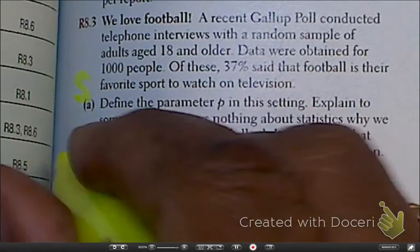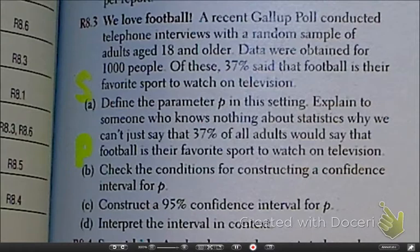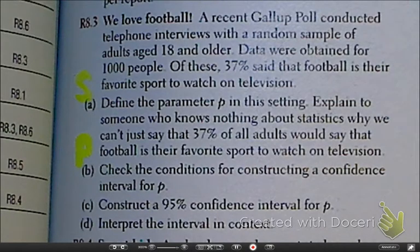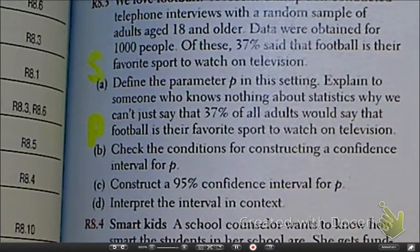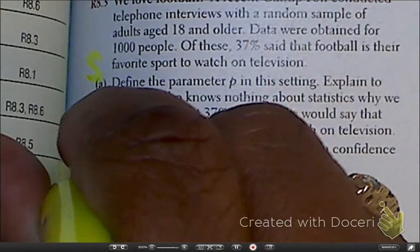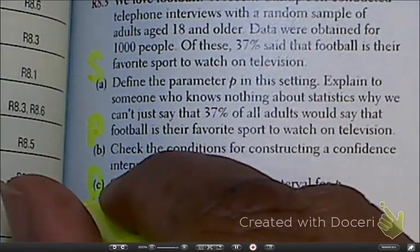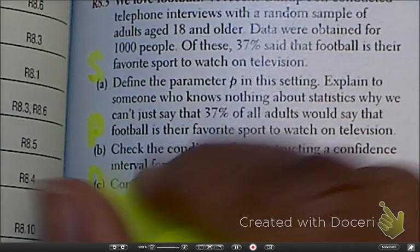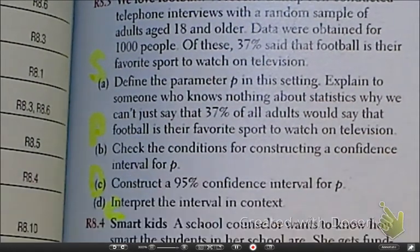As we do the planning, please remember we're looking at our SRS, looking for our 10% rule, and then looking at our normality. Then here, as we look at C, this is the do portion. And then finally, here for part D, we are doing the conclusion.